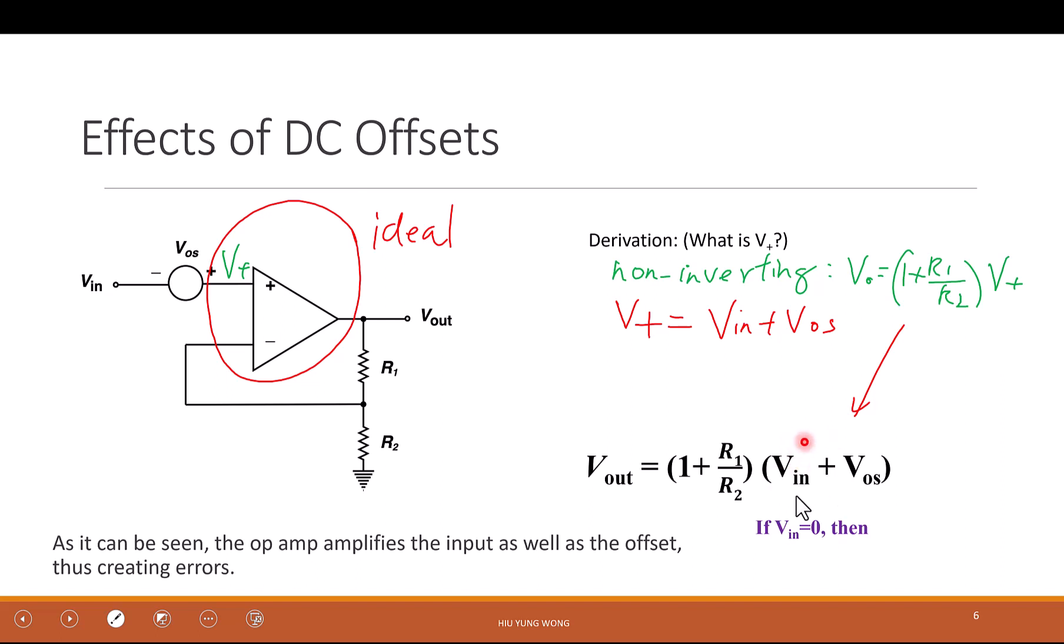So if V_in equal to zero, I am doing a non-inverting amplifier. I expect when V_in equals zero, V_out should be zero. But in this case, when V_in equal to zero, the V_out actually equals to (1 + R1/R2) times VOS. So if I make R1 and R2, R1 divided by R2 large, this offset is going to be amplified.